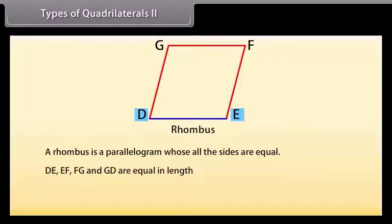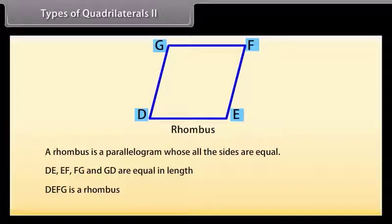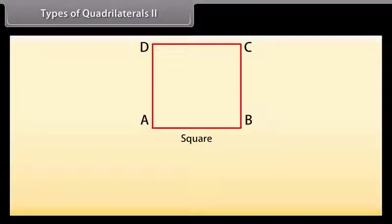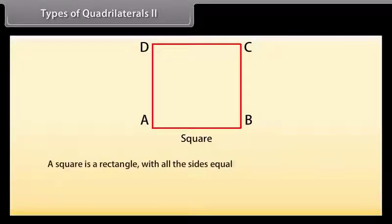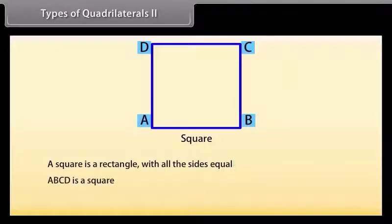Here sides DE, EF, FG, and GD are equal in length, so DEFG is a rhombus. A square is a rectangle with all sides equal, so ABCD is a square. The last type is kite. The two pairs of adjacent sides of a kite are equal. Here AD = DC and AB = BC, so ABCD is a kite.